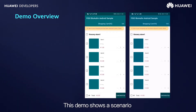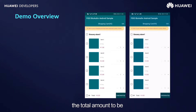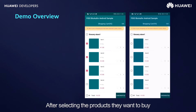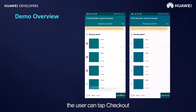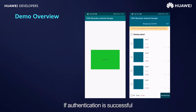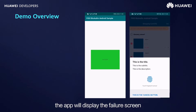This demo shows a scenario where a user has added products to their shopping cart in a shopping app. As the user selects different products in the shopping cart, the total amount to be paid changes accordingly as shown in the lower part of the app. After selecting the products they want to buy, the user can tap Checkout and the app will display a biometric authentication pop-up. If authentication is successful, the app displays the Success screen. If the user fails the authentication, the app will display the Failure screen.